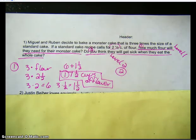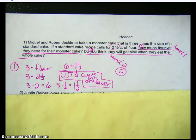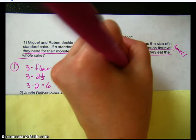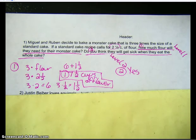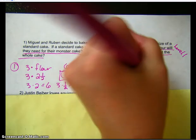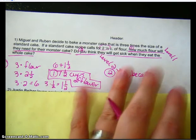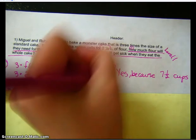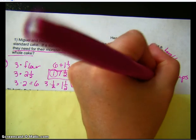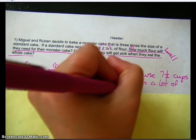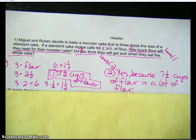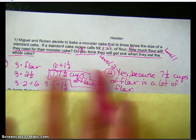I've done question one. Question two: 'do you think they will get sick when they eat the whole cake?' I have to go back to step three and plan. I have to look at how much cake they're going to eat and think about whether that would make you sick. I think they will get sick. But I need to give some reasoning — so I'll say: yes, because seven and a half cups of flour is a lot of flour. Can you imagine seven and a half cups of flour plus sugar plus frosting plus all that stuff? They're going to get sick. So I have answered question two and both questions are complete.